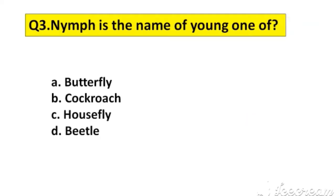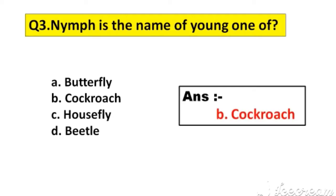Question number 3. Nymph is the name of young one of: A. Butterfly, B. Cockroach, C. Housefly, D. Beetle. The right answer is option B, Cockroach.